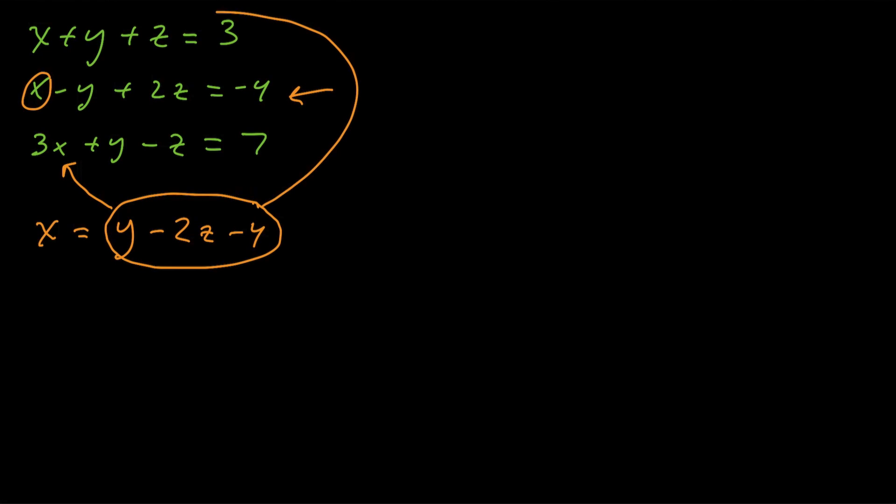Okay, in place of x in the other two equations that we haven't used yet. So if I do that, the top equation would look like y minus 2z minus 4 plus y plus z equals 3. And the other equation, I'll put it over here, is going to be 3 times y minus 2z minus 4 plus y minus z equals 7. So what I'm going to do now that we've done those substitutions, I'm just going to simplify a little bit.